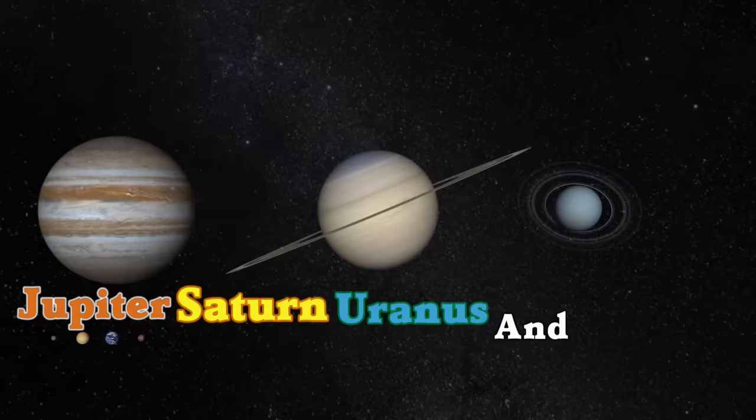Mercury, Venus, Earth, and Mars - they're the first four planets, rocky like ours. Jupiter, Saturn, Uranus, and Neptune - they're made of hydrogen and helium gas like a balloon.